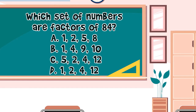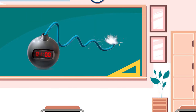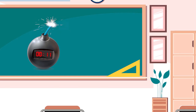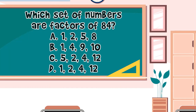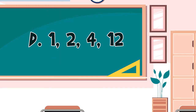Number 2: Which set of numbers are factors of 84? Letter A: 1, 2, 5, and 8. Letter B: 1, 4, 9, and 10. Letter C: 5, 2, 4, and 12. Letter D: 1, 2, 4, and 12. Timer starts now. What's your answer? Letter D: 1, 2, 4, and 12.